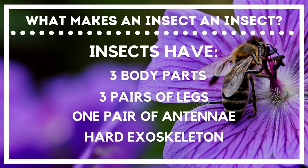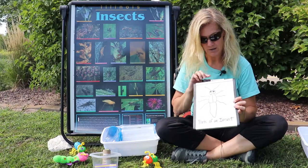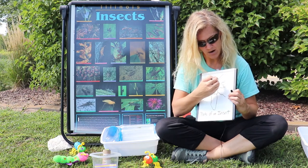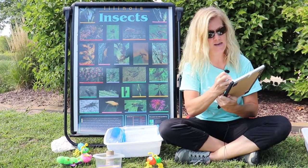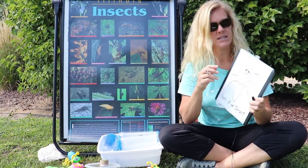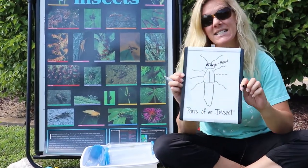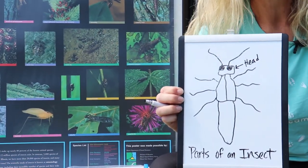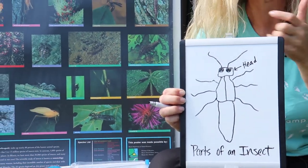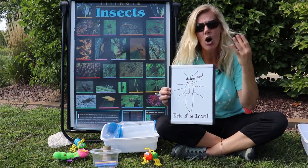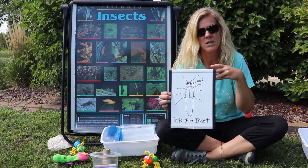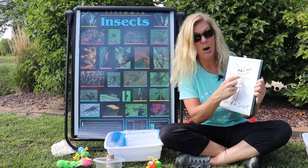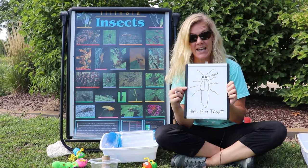Their body is divided into three different parts. We have the head up here in this section, and the head contains the different sensory organs of an insect. So we have the eyes, we have the mouth parts, we have the antennae coming out of the top of the head — all things that insects use to sense the environment around them.